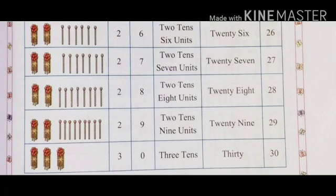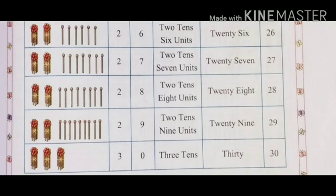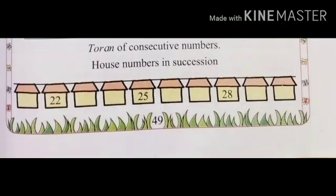Two bunches of math sticks means 20 math sticks. With 9 math sticks: 29. That is 2 tens and 9 units — 29. The spelling of 29 is T-W-E-N-T-Y (20) N-I-N-E (9): 29. Three bunches of math sticks means 30 math sticks — that is 3 tens. The spelling of 30 is T-H-I-R-T-Y: 30.